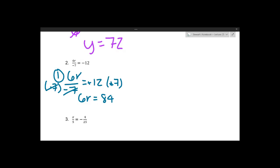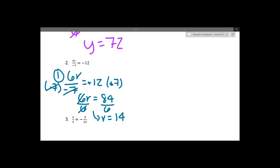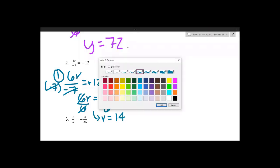From there, we can see that r is being multiplied by 6, so to get rid of that we divide both sides by 6. 6 divided by 6 is 1, so it cancels, and r equals 84 divided by 6, which is 14. So we've solved for r.